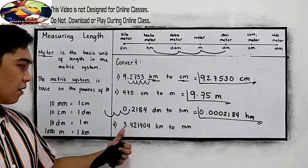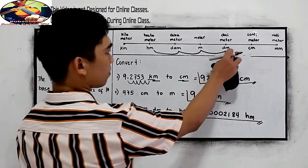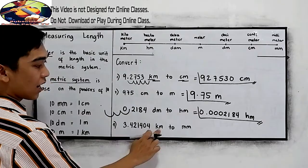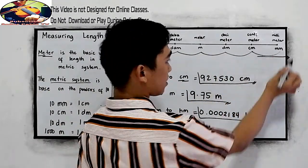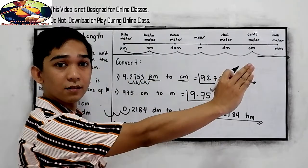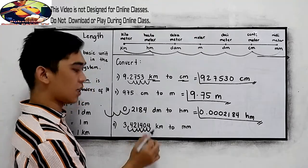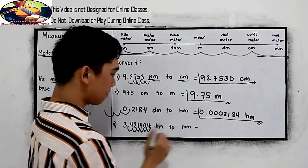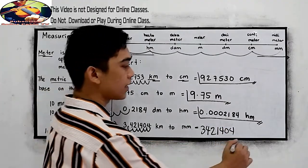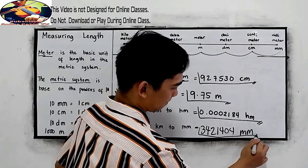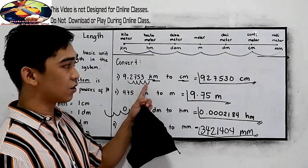And for the last number, 3.421404 kilometers to millimeters. Locate kilometers. It's here. Then 1, 2, 3, 4, 5, 6. We need to move six times to the right. So, our decimal point, 6 times: 1, 2, 3, 4, 5, 6. That will become 3421404, and our unit is millimeter. That is how to convert a certain unit to the desired unit in measuring length.